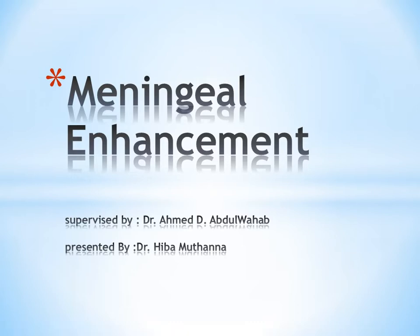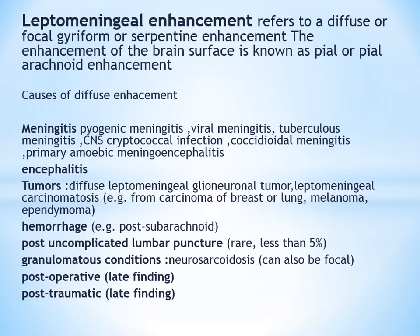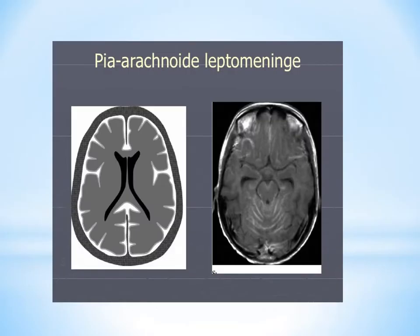Good morning. I will talk about the differential diagnosis of meningeal enhancement. Meningeal enhancement in general is the enhancement of the coverings overlying the brain and spinal cord. There are two types: diffuse or focal gyri-form, serpentine enhancement. This enhancement of the brain surface is also known as leptomeningeal or pia-arachnoid enhancement. Causes include meningitis, encephalitis, tumor, hemorrhage, post-subarachnoid hemorrhage, post-uncomplicated lumbar puncture, granulomatous conditions such as sarcoidosis, post-operative, and post-traumatic.